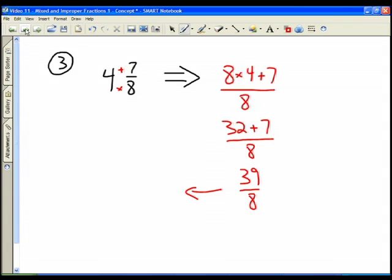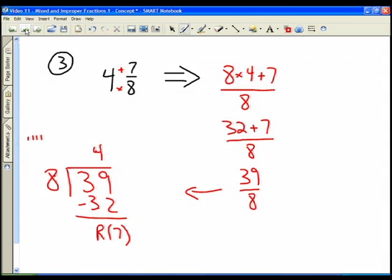And again, going the other way, we would divide 8 into 39. And we have 8, 16, 24, 32. So it would go 4 times. 4 times 8 is 32. And then we subtract 39 minus 32 is a remainder of 7. So 39 eighths would be 4 with a remainder of 7 eighths.